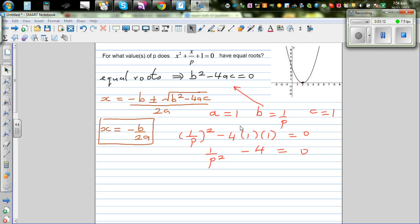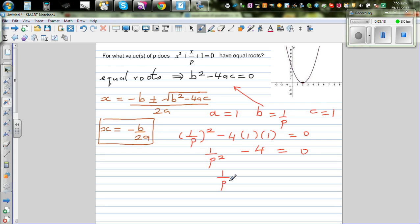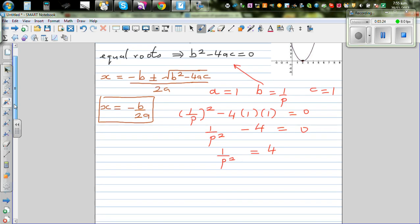So making this the subject, I can say 1 over p squared equal to 4. Now making p the subject, can I say this implies 1 over 4 is equal to p squared. Which means, or this implies p is plus or minus 1 half.